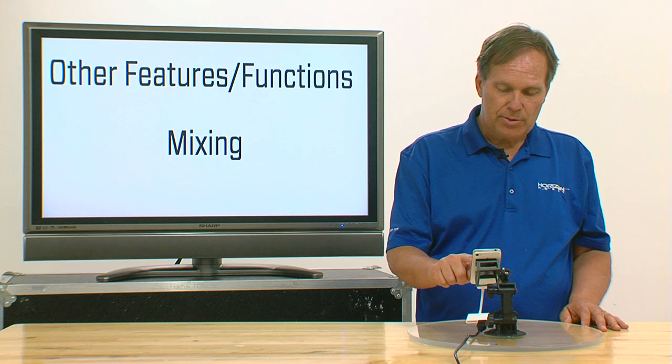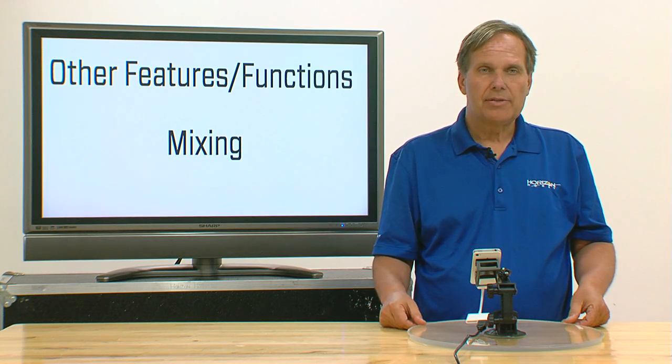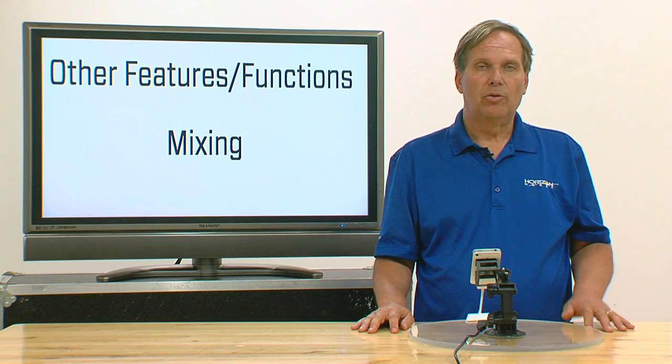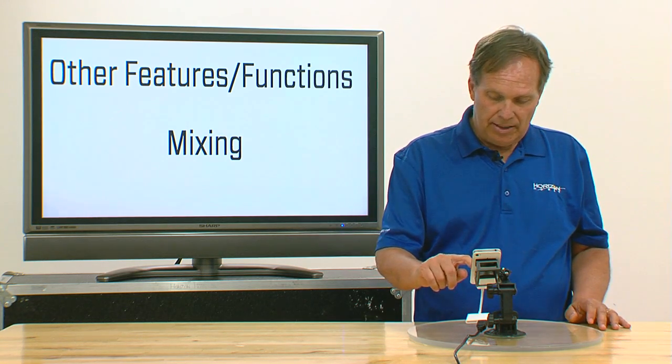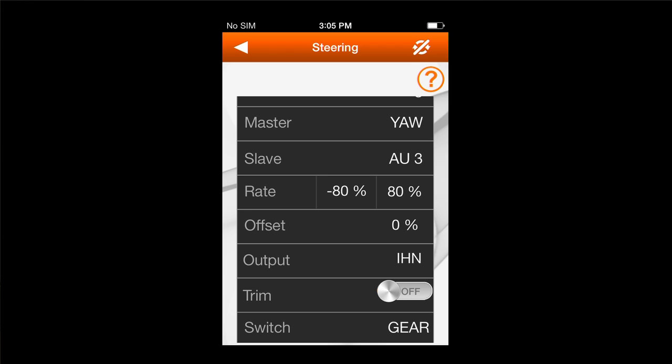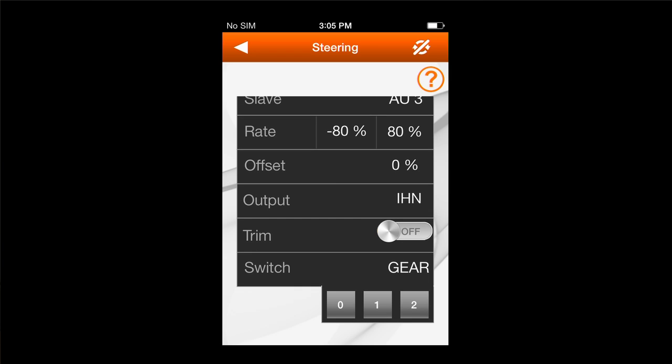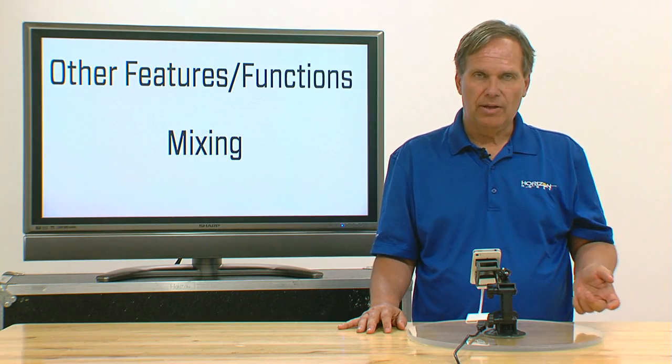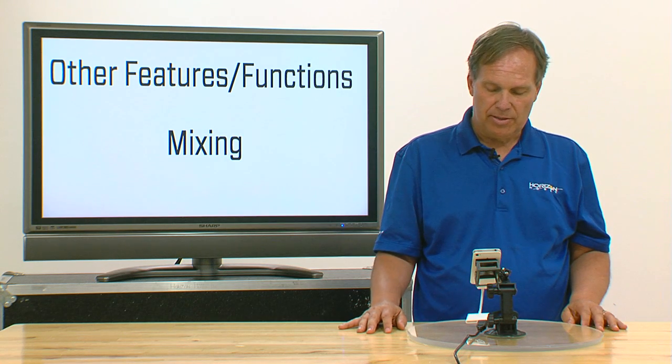Now, the last function is the switch. At the beginning of this video section, we talked about the ability to be able to turn this mix off and on. So I'm going to scroll down here and I want this mix to be turned off and on with the gear channel. So when I retract the gear, the function is going to be on. When I retract the gear, the function is going to be off, so the servo isn't going to be moving. When I put the gear down, the function is going to be on, so it's going to give me steering.